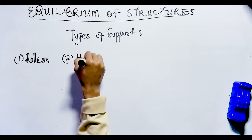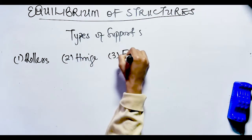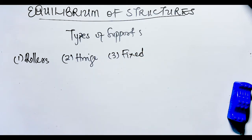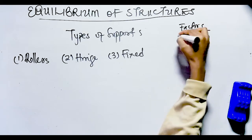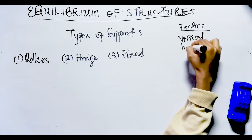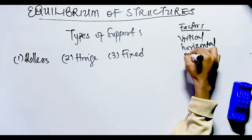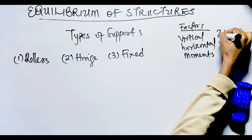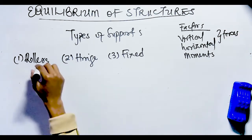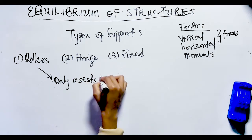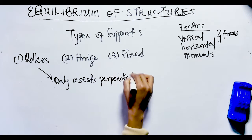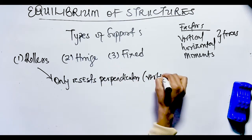There are three types of supports: roller supports, hinge supports, and fixed supports. The number of reactions for any support depends on three factors: vertical forces, horizontal forces, and moments. Starting with roller supports — the roller support only resists perpendicular forces; it cannot resist horizontal forces or moments.